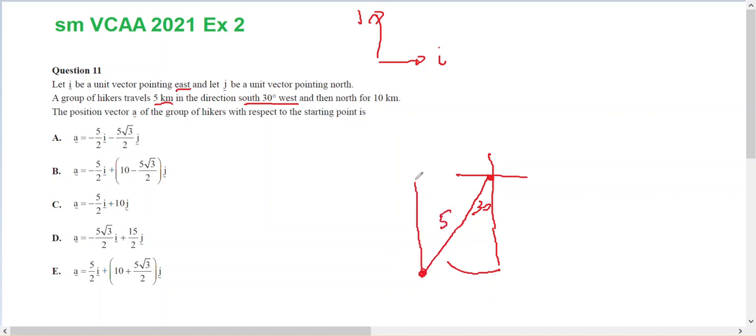And then north for 10. The position vector a of the group with respect to the starting point - well, the unit vector we're interested in is this vector here, the position vector of the finished product.